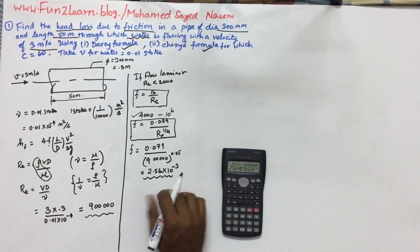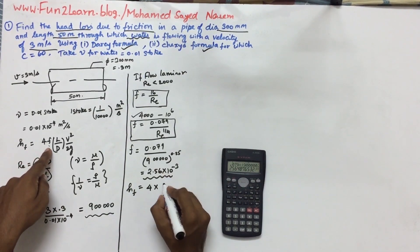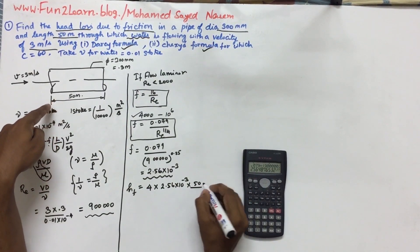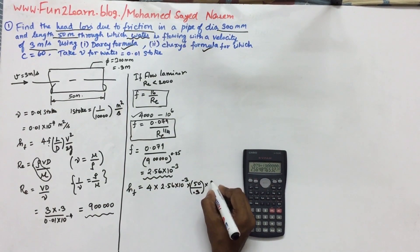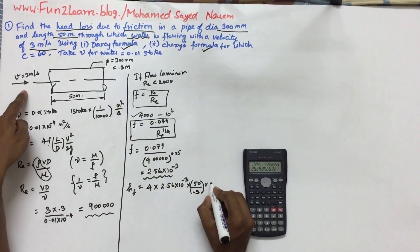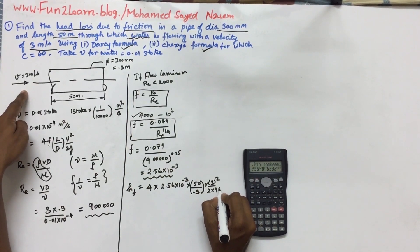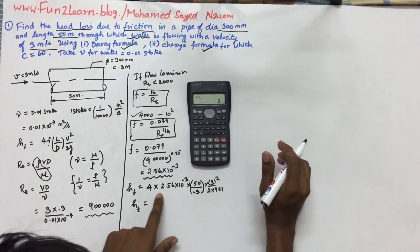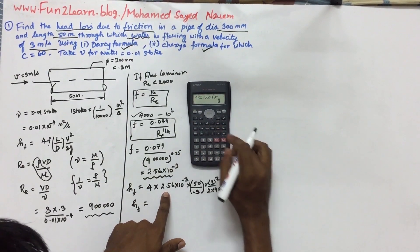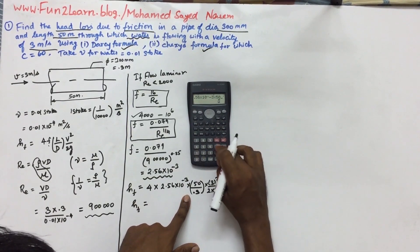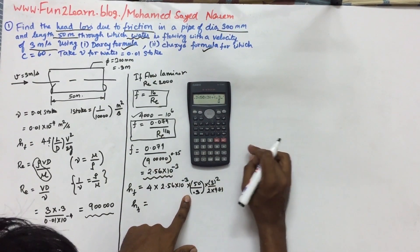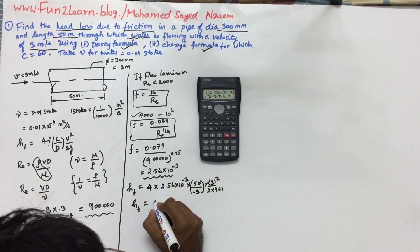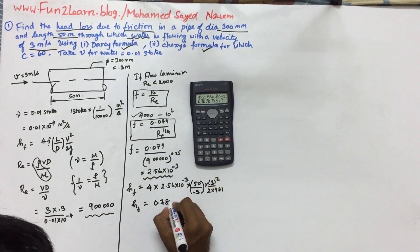So hf equals 4 into f, 2.56 into 10 power minus 3, into length of the pipe 50 by diameter 0.3, into v squared, velocity 3 meters per second, v squared by 2 into 9.81. So hf value equals 2.56 into 10 power minus 3 into 50 into 3 squared divided by 0.3 into 2 into 9.81. So head loss due to friction is 0.782.